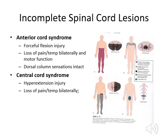Central cord syndrome, depicted upper right, is a lesion starting in the middle and spreading outward — often from a hyperextension injury like a motor vehicle accident. You lose pain and temperature bilaterally because the crossing fibers of pain and temperature in the anterior white commissure are affected, as information from each side crosses there before ascending the opposite side.